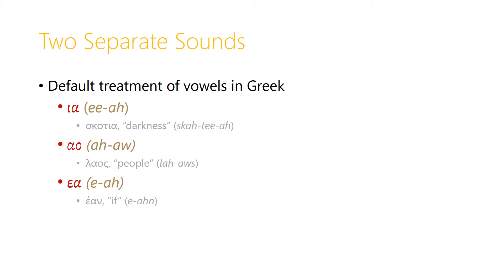In Greek, we have several places where two vowels together act like the English hiatus — they keep two separate sounds, and this is actually the default treatment of vowels in Greek. All other things being equal, the two vowels get pronounced separately. The iota-alpha combination in the word 'skotia' is pronounced 'ia'; the iota and the alpha keep their separate pronunciation. Similarly, in the Greek word for 'people', 'laos', we pronounce the alpha and the omicron separately, and in the Greek word for 'if', 'ean', we pronounce the epsilon and the alpha separately again.